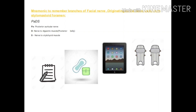The mnemonic is PADS, as you can see different types of pads in this slide. P stands for posterior auricular nerve. D stands for nerve to digastric muscle — and mind you, this is only the posterior belly of the digastric muscle which is supplied by this branch. And S stands for nerve to stylohyoid muscle.